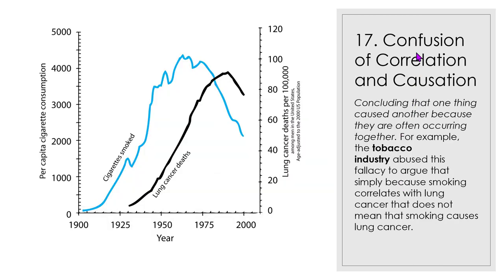We talked about confusing correlation and causation with the autism and vaccination example, but you can also do this in reverse. When something is causative in nature, you can say it's just correlated but not meaningful. Cigarette smoking was highly correlated with lung cancer death — you can see the graph. But for a long time, tobacco companies said this is just a correlation, it's not causative, and the cigarettes aren't causing the lung cancer. This argument was used for a very long time so that the tobacco industry did not have to put warnings on their cigarette packages.